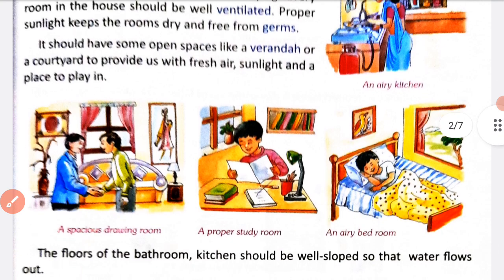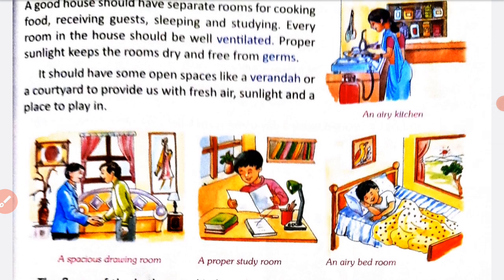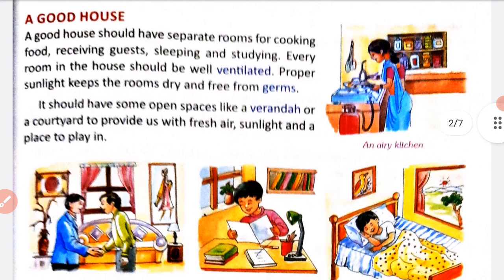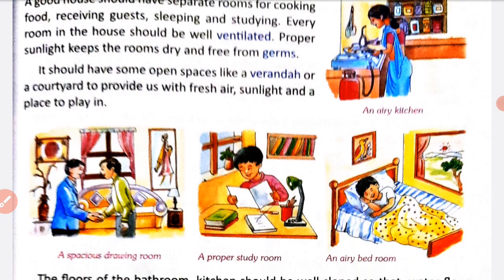A good house should have some open spaces like verandas or a courtyard to provide us with fresh air, sunlight, and a place to play. Ek good house mein open space hona chahiye jis mein proper sunlight aati ho, fresh air hum le sakhein, aur khailne ke liye ek proper place ho. A good house should have separate rooms like kitchen, bedroom, dining room, and study room, and it should have some open space.